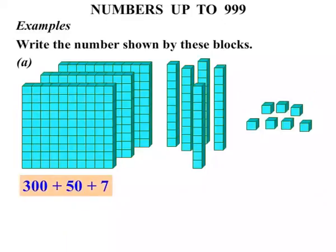So let's add this now. 300 plus 50, well that's 350, plus another 7 equals 357. Now that's the number there. Let's just write that up the top here.